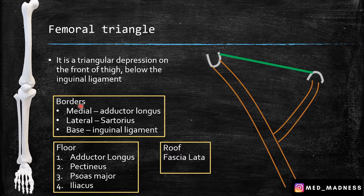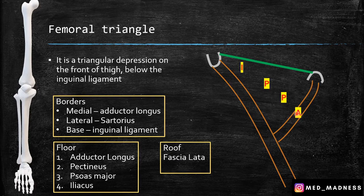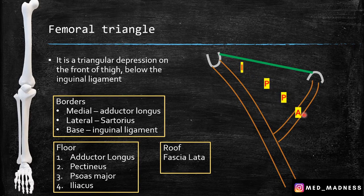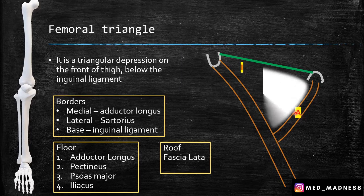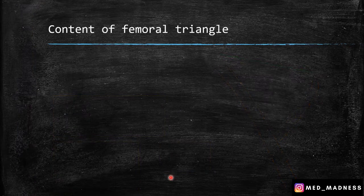So the borders are adductor longus, sartorius, and inguinal ligament. The muscles that form the floor of the femoral triangle — remember ABPI: adductor longus, pectineus, psoas major, and iliacus. These four muscles form the floor of the femoral triangle, and the roof is formed by the fascia lata, which is a very tough fascia in front of the thigh.